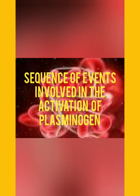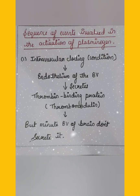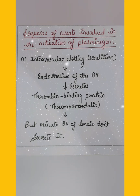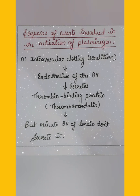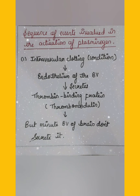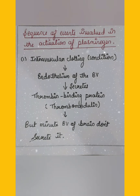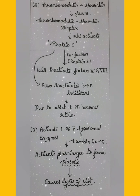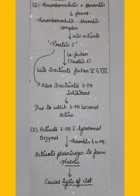Now let us look at the sequence of events involved in the activation of plasminogen. The first step is that when there is intravascular clotting, the endothelium of the blood vessel will start secreting thrombin-binding proteins called thrombomodulin. However, minute blood vessels like those in the brain will not secrete thrombomodulin. The thrombomodulin formed in the first step will combine with thrombin to form a thrombomodulin-thrombin complex.